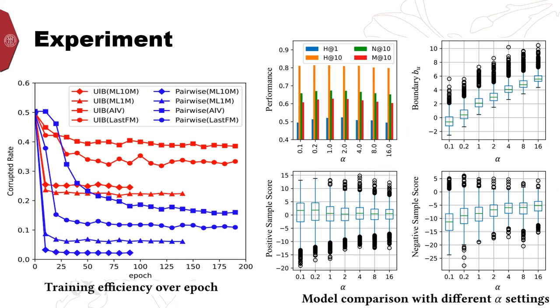The left figure shows the ability of our approach to improve training efficiency and alleviate the gradient vanishing problem. The x-axis is the epoch through training, while the y-axis is the corrupted rate, which is regarded as the number of samples providing the gradient information. We can observe that the corrupted rate in our model, that's the red line, is higher than that in pairwise loss on all datasets.